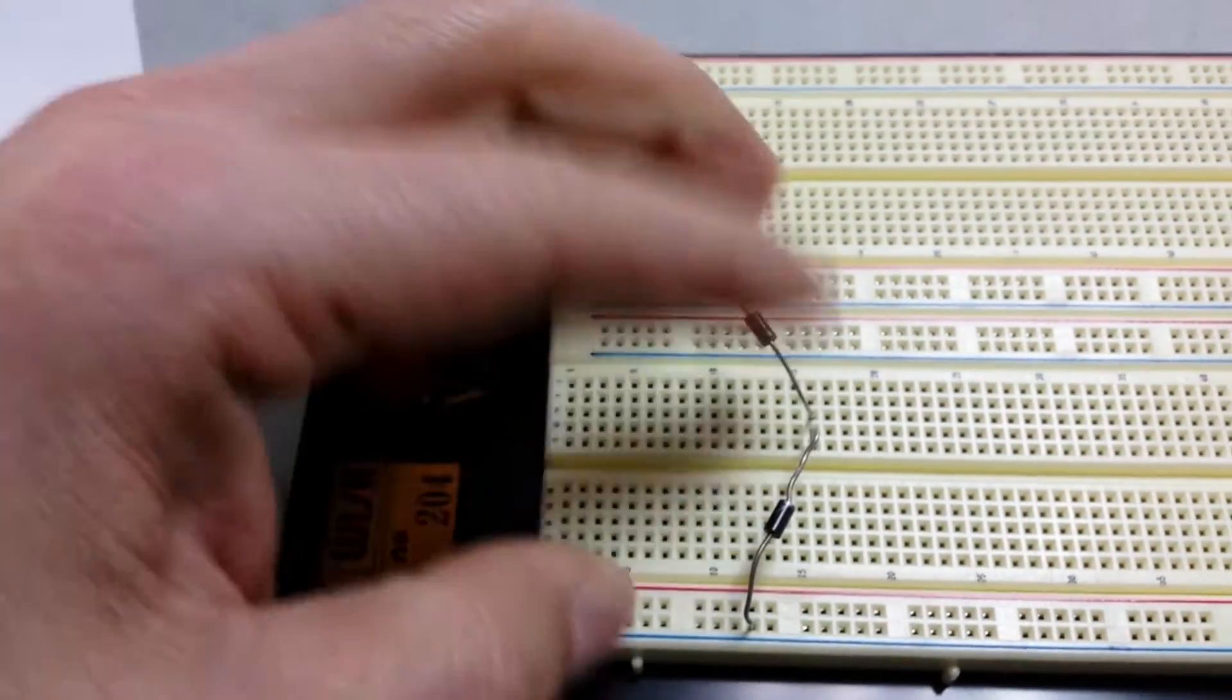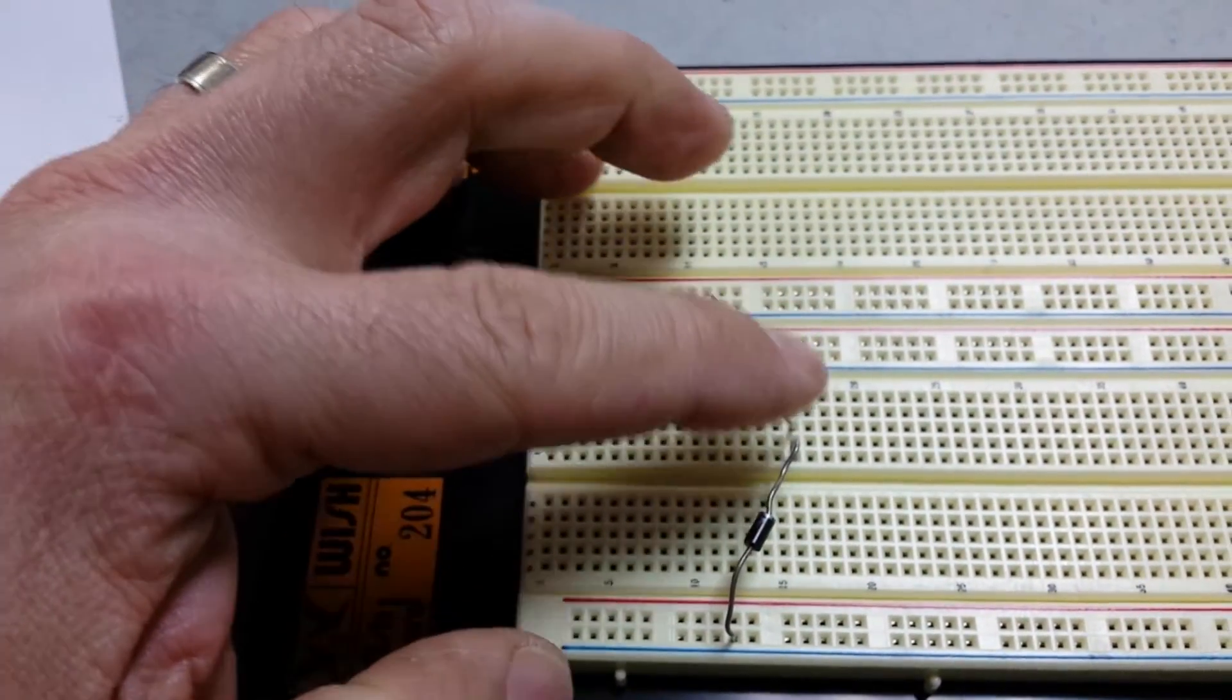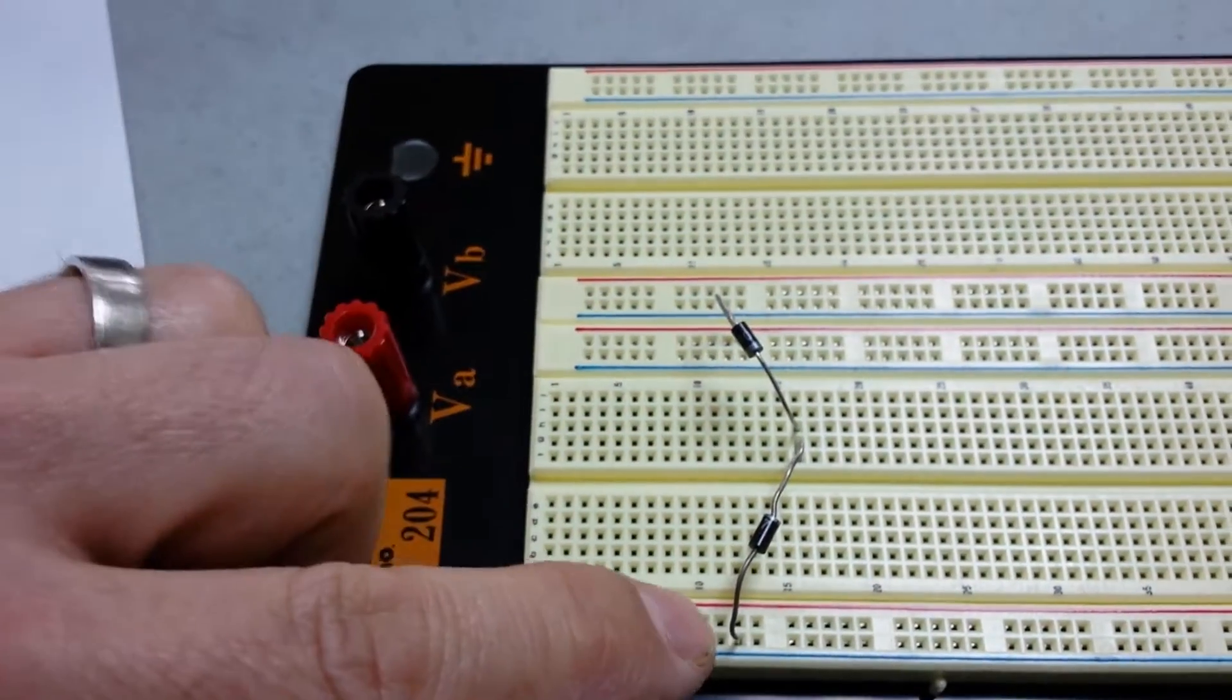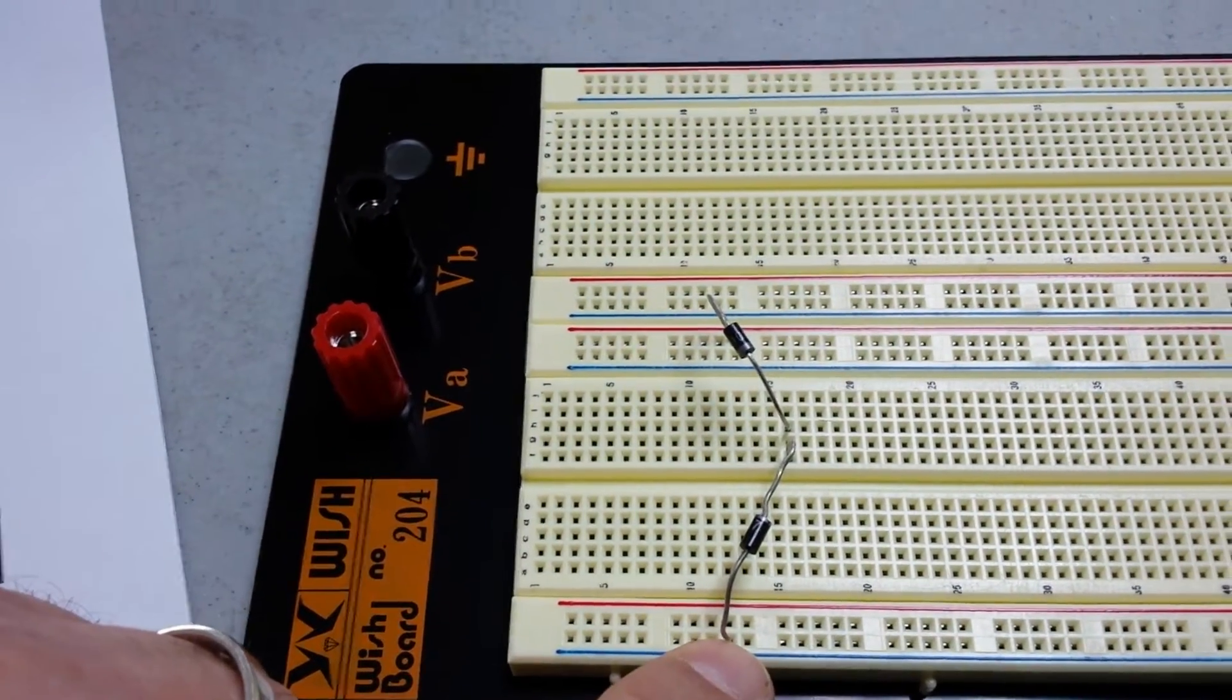So anode to cathode, cathode and anode connected together. Anode going to your negative.